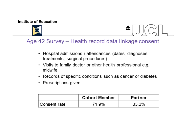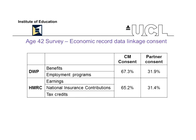The consent rate for cohort members was pretty good at 72%, but not so good for partners at just a third. Similarly, consent was obtained to link survey responses with economic records — that would include information held by the DWP about benefits received and employment programs, and information held by HMRC on earnings, national insurance contributions and tax credits. We sought consent from cohort members and their partners — cohort member consent rates were pretty good, a bit lower than the health consent rates, with partner consent rates lower.